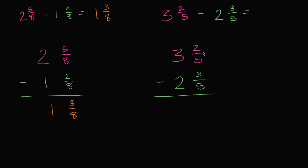Well, one option is to regroup. Let's take 1 from the ones place here. So let's take 1 from this and then that's going to turn into 2. And then 1 is the same thing as 5 fifths. So 2 plus 5 fifths is equal to 7 fifths.